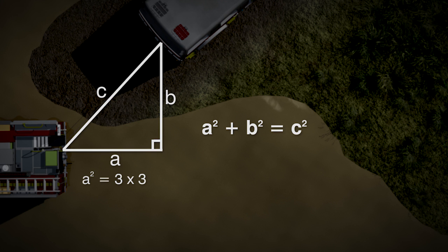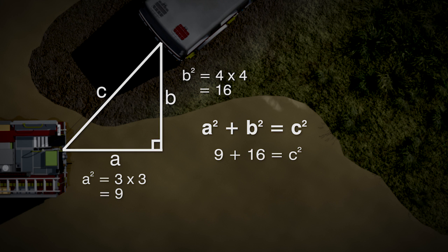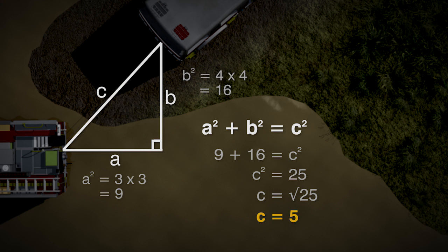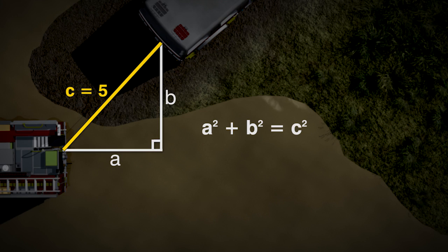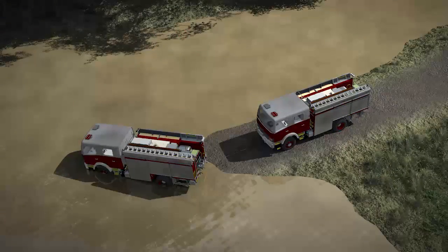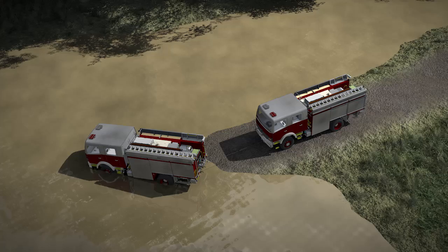In this case, a² equals 3 times 3, which equals 9. b² equals 4 times 4, which equals 16. So we know that c² equals 9 plus 16, which equals 25. To find c we need to work out the square root of 25, which is 5, because 5 times 5 equals 25. The length of c is 5 metres, and the length of our recovery strap needs to be at least that length to extract the fire truck.